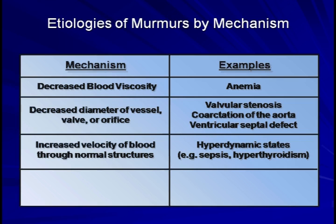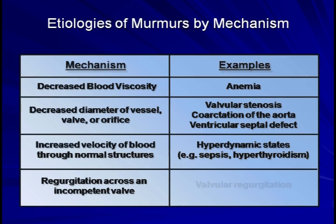Finally, a mechanism not previously mentioned is regurgitation across an incompetent valve. The turbulence caused by this is a combination of a narrow diameter orifice along with an abnormal morphology of the valve, which sets up eddies in the flow of blood that can't be easily accounted for by Reynolds number.